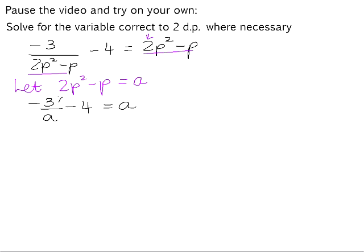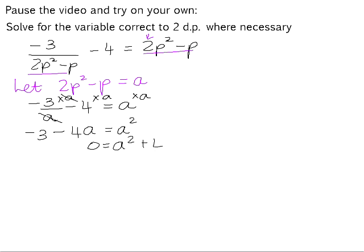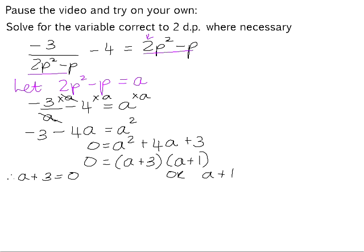We can now multiply through by the lowest common denominator, which is a. That gives us — correcting a sign error — negative 3 minus 4a equals a squared. Getting into standard form: a squared plus 4a plus 3 equals 0. That factorizes into a plus 3 and a plus 1. Therefore, a plus 3 equals 0 or a plus 1 equals 0.